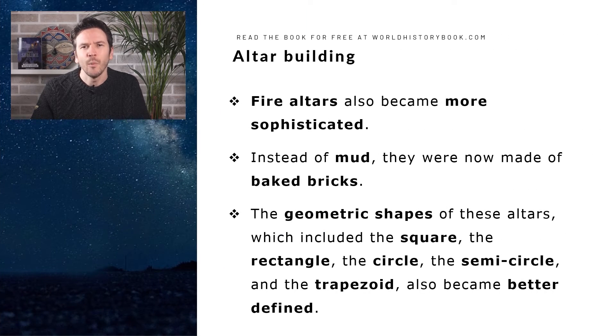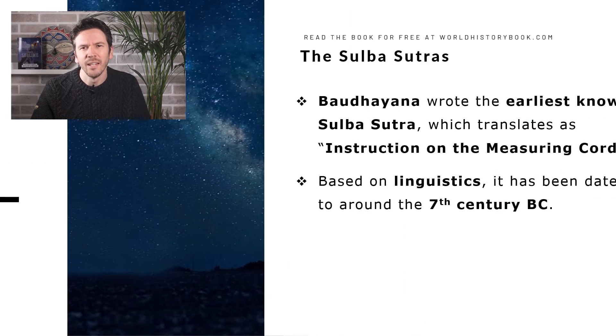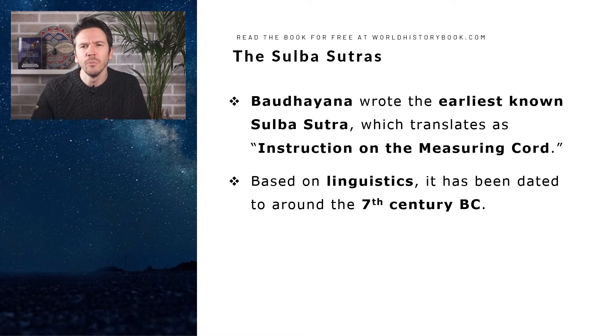Fire altars, which had been central to the ancient Vedic religion, also became more sophisticated. In the past, they were made of mud, but now they were made of baked bricks. And the geometric shapes of these altars, which included the square, the rectangle, a circle, a half circle and a trapezoid, became mathematically defined. And this is where our man Bodhayana comes in. Bodhayana wrote the earliest known Sulba Sutra, which roughly translates as instruction on the measuring cord.